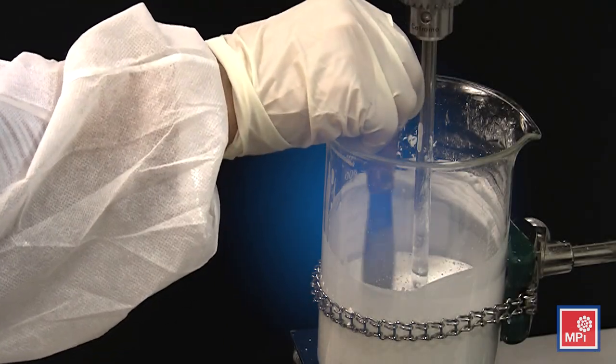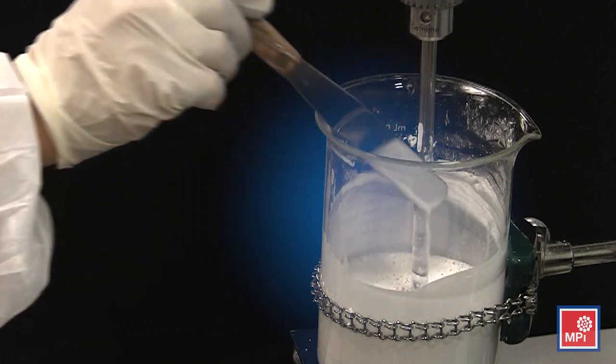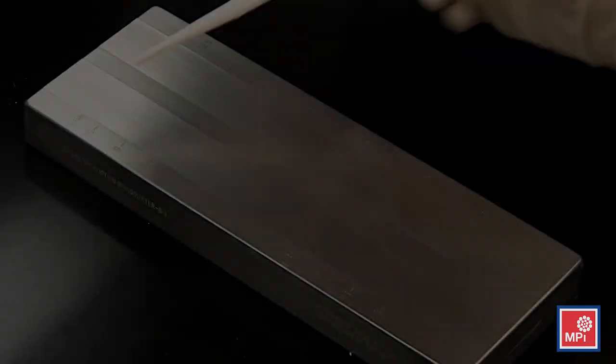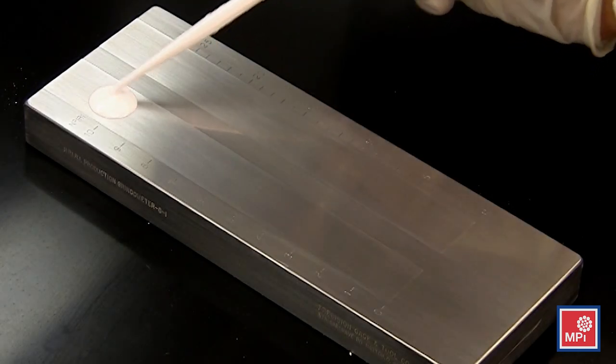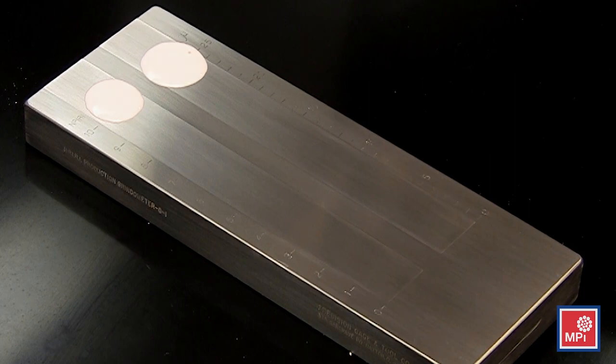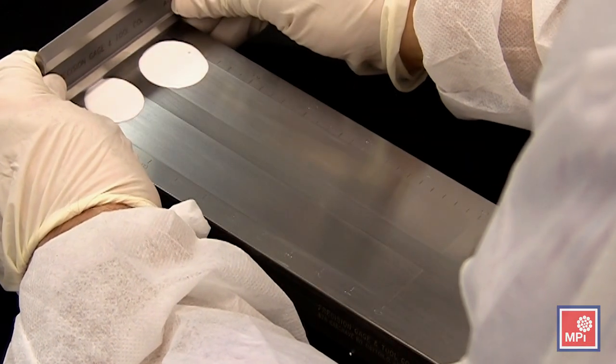Use a spatula to drain and examine the quality of the dispersion by looking for any agglomerates. Now let's check the dispersion using a Hegman grind gauge to ensure the wax particles fall within the Micro Powders specification.